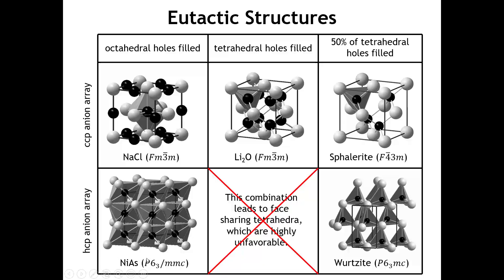The sodium chloride structure is seen for a wide range of compounds. For tetrahedral hole filling, we already discussed the lithium oxide (anti-fluorite) structure, where oxide ions sit at face-center positions and lithium ions occupy tetrahedral holes in each quadrant of the unit cell. Attempting this for an HCP oxygen array would produce face-sharing tetrahedra, where the cation–cation distance is actually shorter than the anion–cation distance—highly unfavorable—so this structure is not observed for any combination of elements.